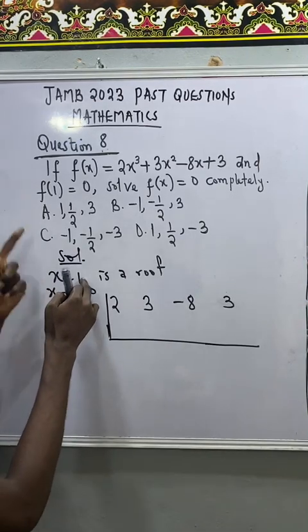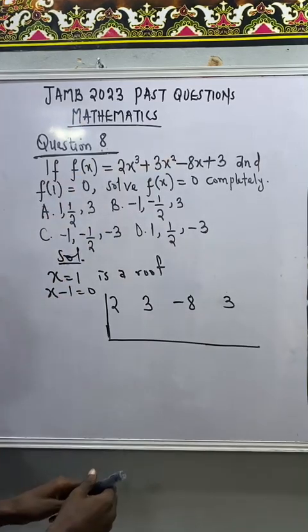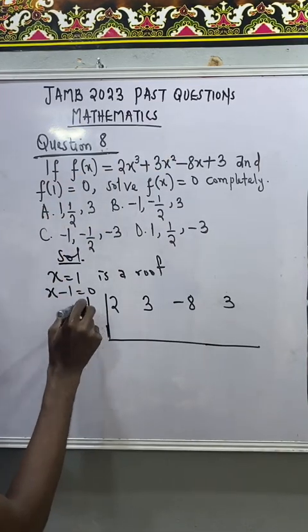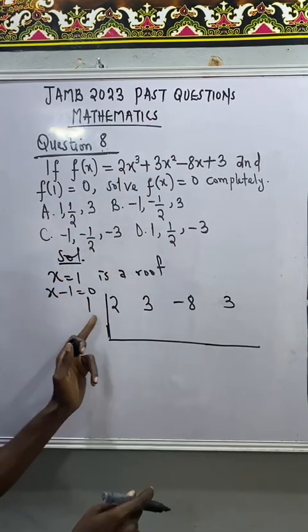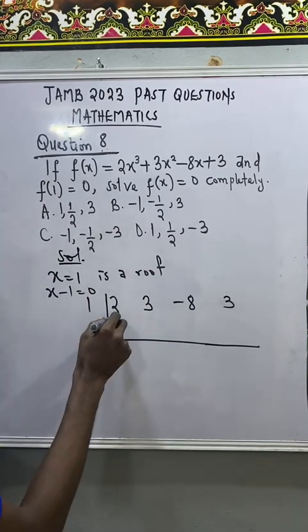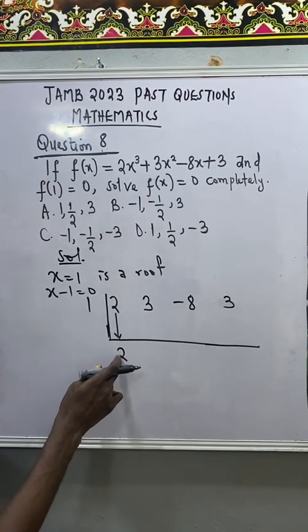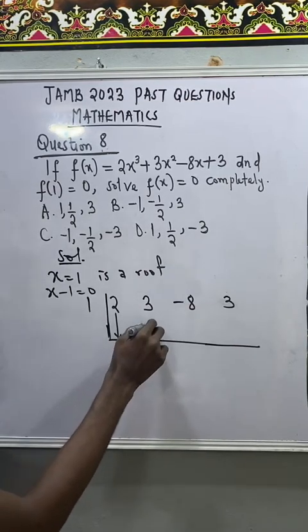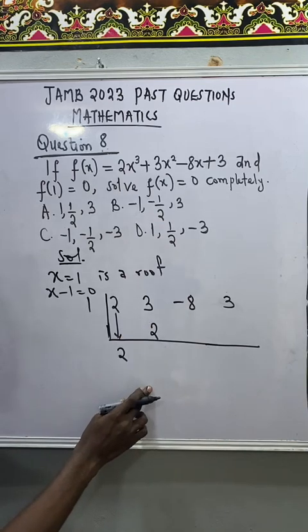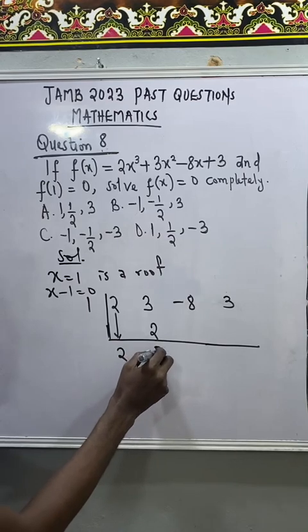Now, x equal to 1 is what they substitute to get 0, which is the root. I will now use x equal to 1 to deal with this. First of all, I will drop this first 2. Dropping the first 2, I will have this. Multiply this 2 by 1. That is 2 times 1. That will give me 2. Add this and this together. That will give me 5.